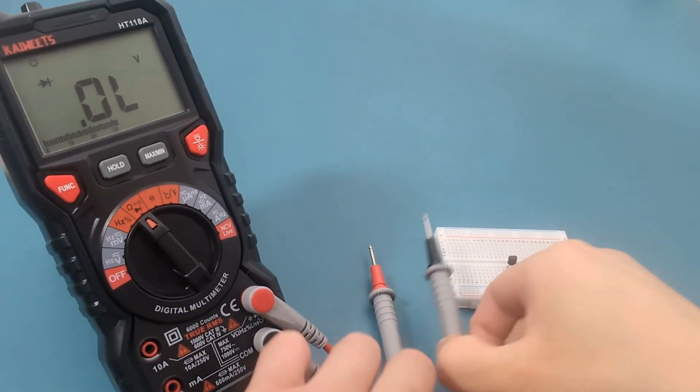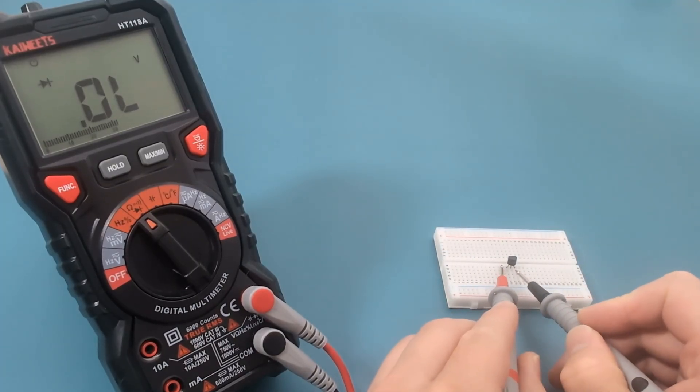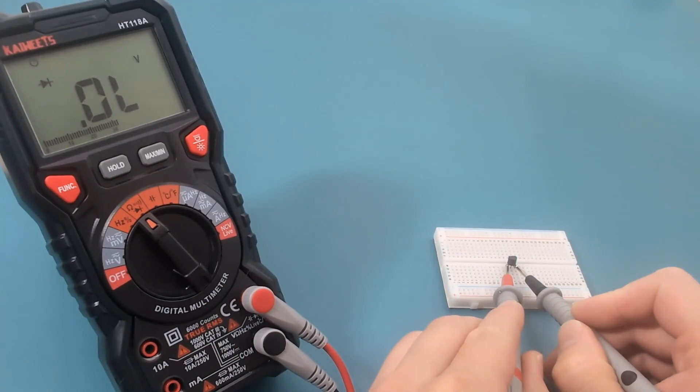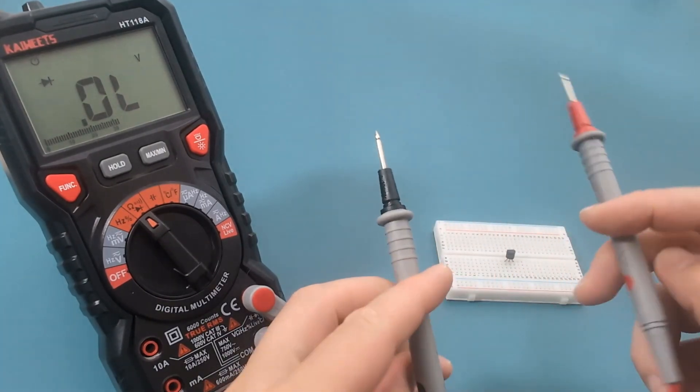Touch the black probe to the left wire and the red probe to the middle wire of the transistor. If you don't get any voltage drop, reverse your probes. If you still don't get any voltage drop, you have a bad transistor.